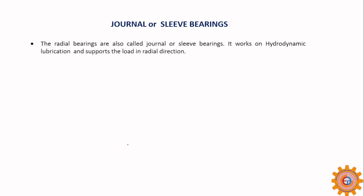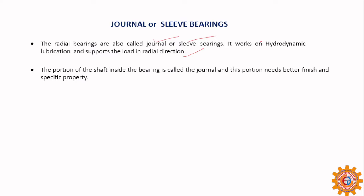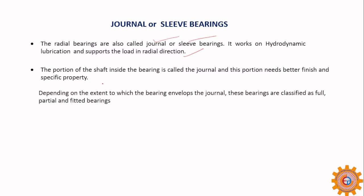What is a journal or sleeve bearing? The radial bearings are also called journal and sleeve bearings — they are called radial because the load is radial. It works on hydrodynamic lubrication and supports the load in radial direction. The portion of the shaft inside the bearing is called the journal, and this portion needs a better finish and specific properties. Depending upon the extent to which the bearing envelopes the journal, bearings are classified as full, partial, or unfitted.